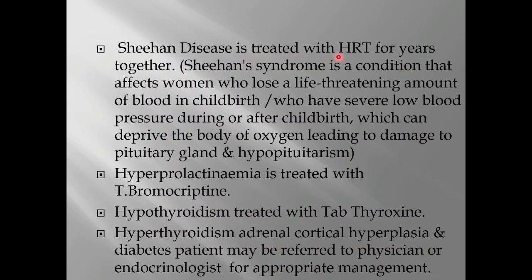Sheehan's syndrome is treated with HRT (hormonal replacement therapy) for many years. Sheehan's syndrome is a condition that affects women who lose a life-threatening amount of blood in childbirth or have severe low blood pressure during or after childbirth, which can deprive the body of oxygen, leading to damage to the pituitary gland and hypopituitarism. It is treated with Tab Bromocriptine. Hypothyroidism is treated with Tab Thyroxine. Hyperthyroidism, adrenal cortical hyperplasia, and diabetes patients must be referred to a physician or endocrinologist for appropriate management.